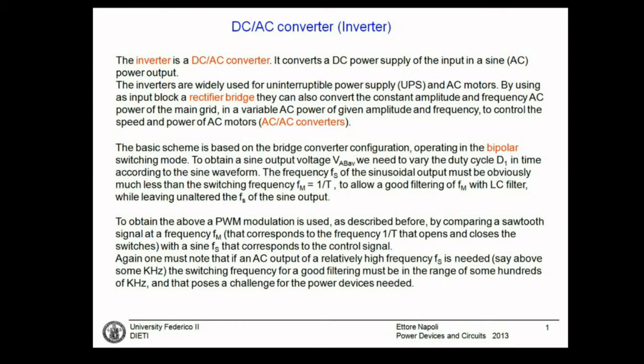In these few slides, we will give a brief overview of the DC-DC converter — that is, the bridge converter — that we have seen in its most common application, which is as a DC-to-AC converter. A DC-to-AC converter is also most commonly known as an inverter. You have a DC voltage and on the output you will have a sinusoidal output.